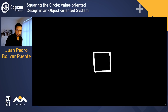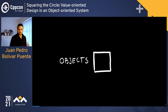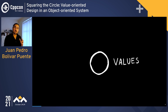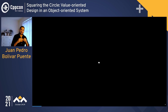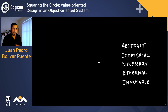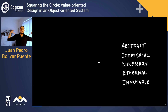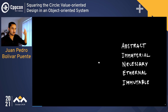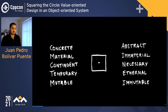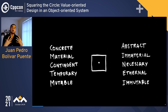In our metaphor, squares are objects and circles are values. Circles are values because a circle is perfect — when you zoom out, it becomes a point, a representation for something purely abstract: an idea that is immaterial, necessary, and immutable, floating in a conceptual land outside space and time. Objects, however, are boxes — concrete, material, living in space and time, temporary and mutable.